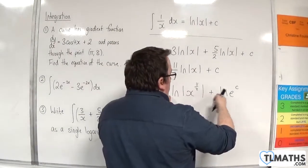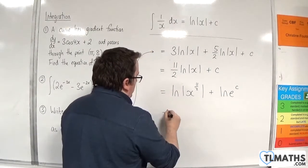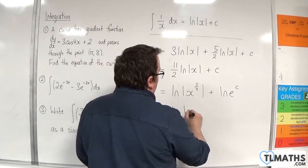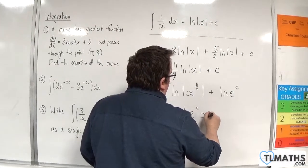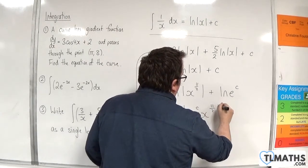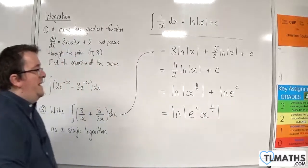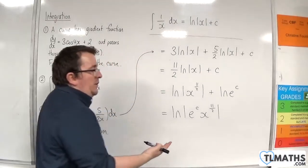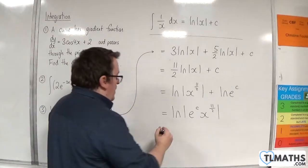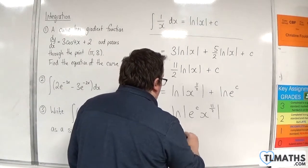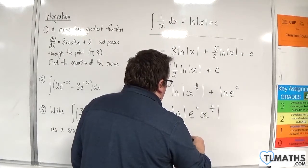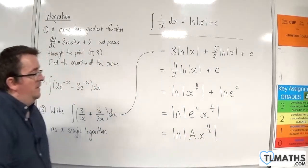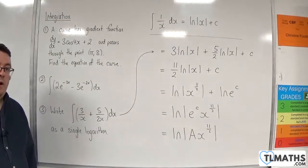Now we can bring those two logs together using our product rule. That would be the natural log of e to the c x to the 11 halves. And now it's written as a single logarithm. You could, because e to the c is just a constant, write that as another constant to make it look even neater. You could write it as a x to the 11 halves, where a is equal to e to the c. That is an alternative way you could write it.